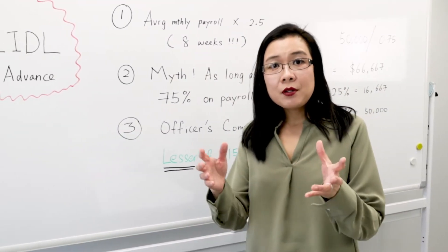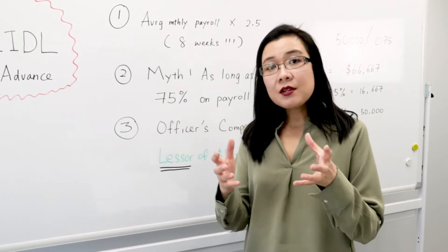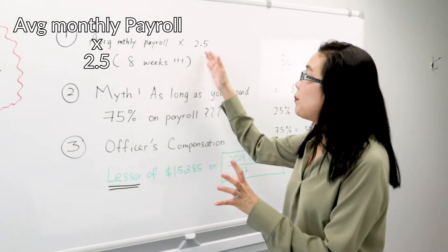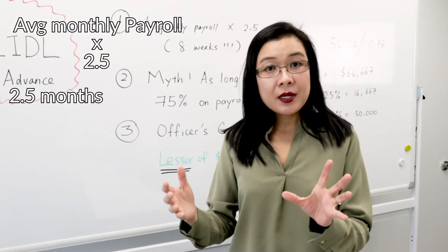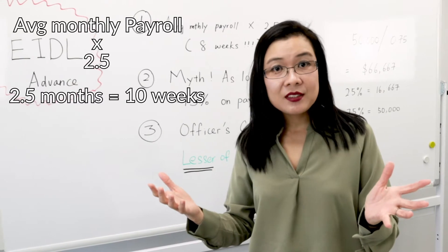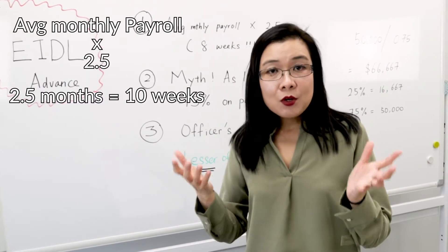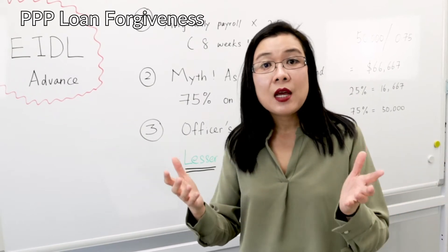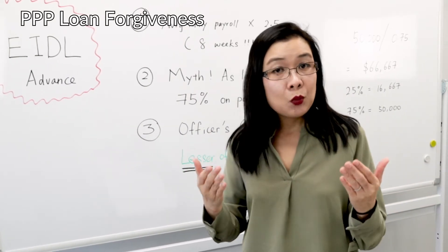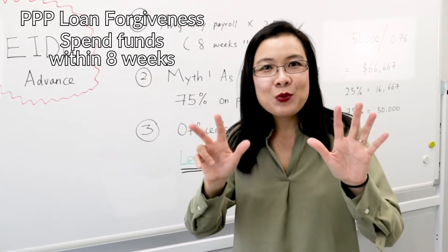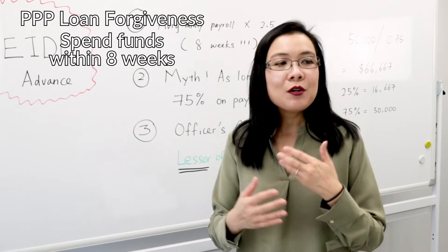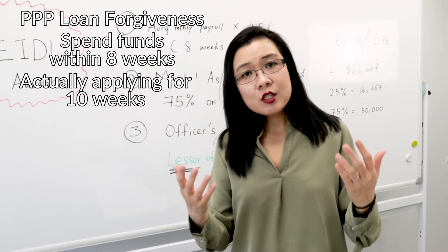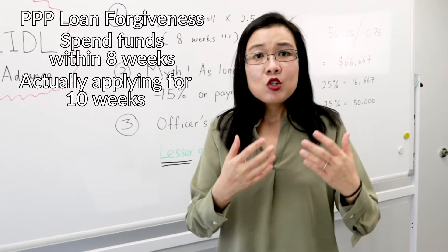If you remember when you apply for PPP, your calculation is average monthly payroll times 2.5. Now 2.5 months, that is about maybe 10 weeks. But remember, the rule of PPP forgiveness is that you have to spend all the money once the funds are dispersed within how long? Within eight weeks. So just think about it - when you apply for the loan, you're actually applying for 10 weeks, but when you disperse the funds, you have to spend the funds in eight weeks.